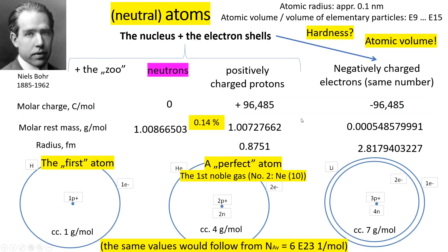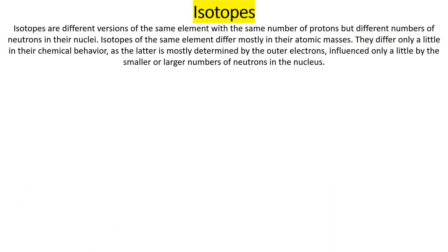Let me show you a slide from the previous lecture highlighting neutrons — this is because neutrons make the difference between different isotopes. Isotopes are different versions of the same element with the same number of protons, but with different numbers of neutrons in the nuclei.